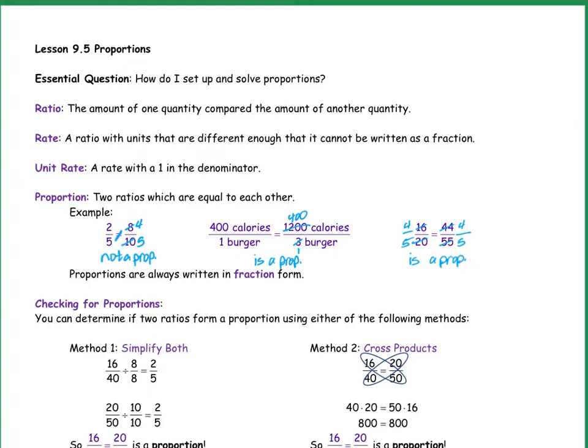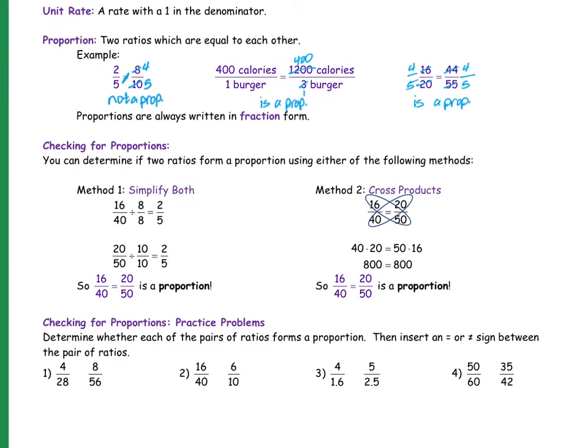There's two different ways to check if it's a proportion or not. One is what we just did, it's called simplifying both. So I take both fractions, simplify them, see if they are equal to each other. Method two is called cross products. Pretty easy. I cross multiply. If they equal each other, then it's a proportion. 16 times 50 and 40 times 20, they both equal 800, so therefore it is a proportion.